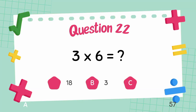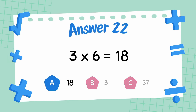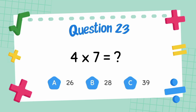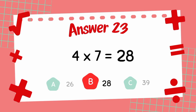What is 3 multiply 6? The answer is 18. What is 4 multiply 7? The answer is 28.